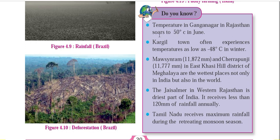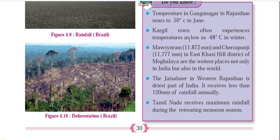Some important facts: temperature in Ganganagar in Rajasthan soars to 50 degrees Celsius in June — extreme heat that can cause skin cancer and heat strokes. Ganganagar is a north-western district of Rajasthan sharing a border with Pakistan. Kargil town often experiences temperatures as low as minus 48 degrees Celsius in winter — an important military base in Jammu and Kashmir where our soldiers serve in extreme conditions.